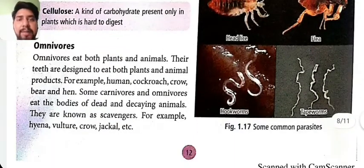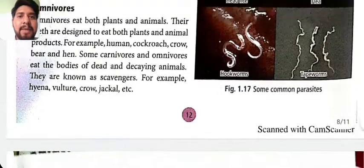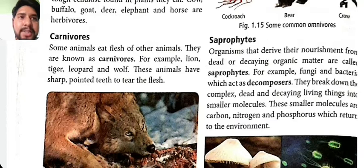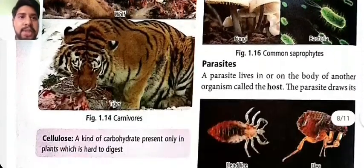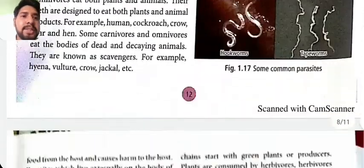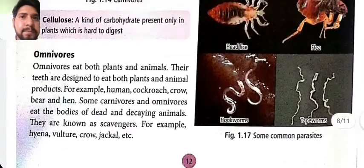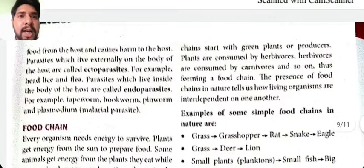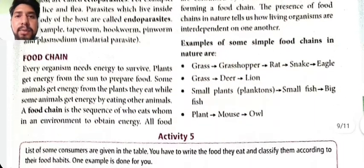Saprophytes are organisms that derive their nourishment from dead or decaying organic matter — for example, fungi and bacteria. They act as decomposers in nature. Parasites are organisms that live on or in the body of another organism called the host. The parasite draws its food from the host and causes harm to the host.